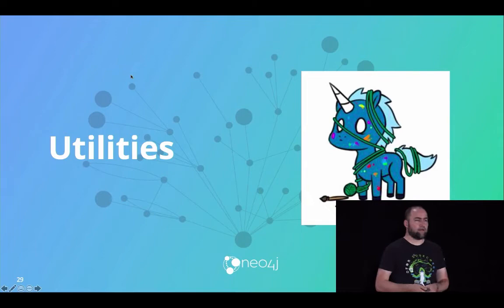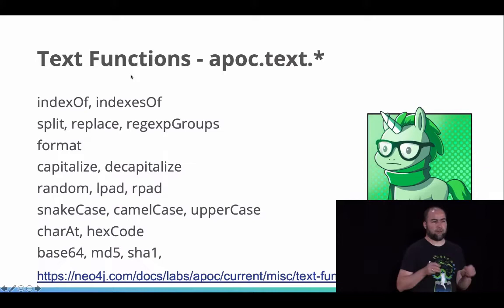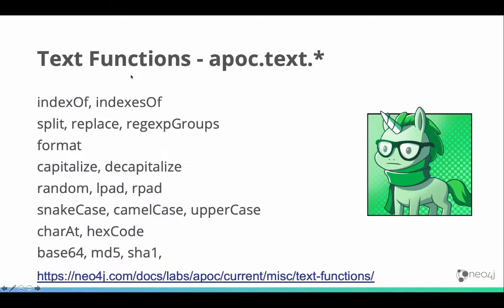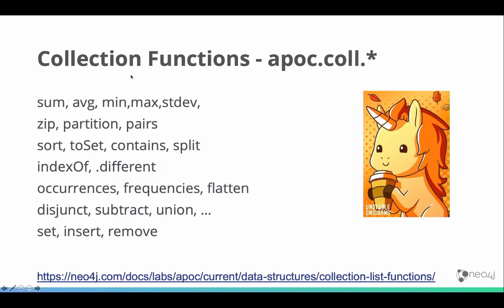Let's look at some utilities. APOC contains a lot of text functions — looking for characters, splitting, regular expressions, formatting, capitalization, URL encoding, digest encoding, and more. This makes it easier to avoid round trips to the client just to do simple functions. The same is true for collection functions, where APOC adds a lot of additional value: partitioning a collection, getting the min or max, finding elements, set operations on collections, and updating collections as part of your Cypher statement.